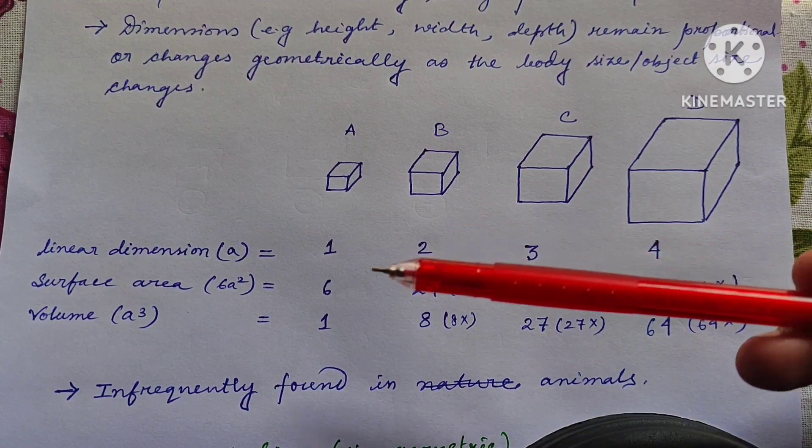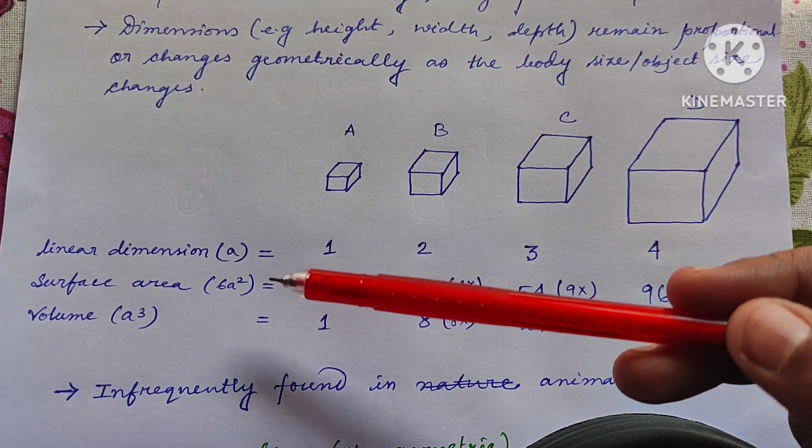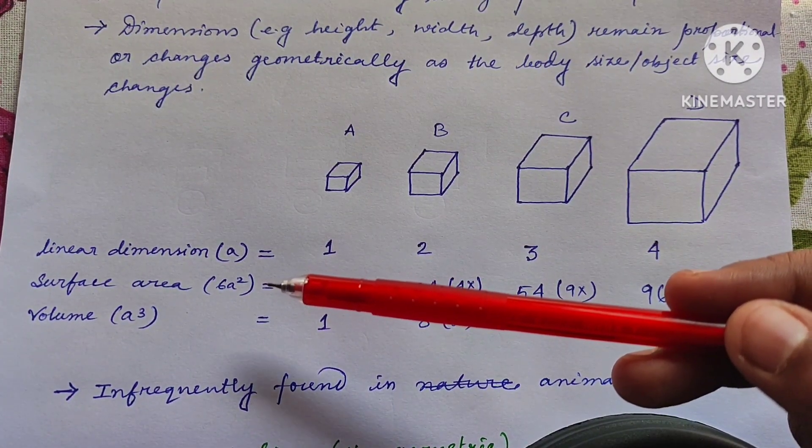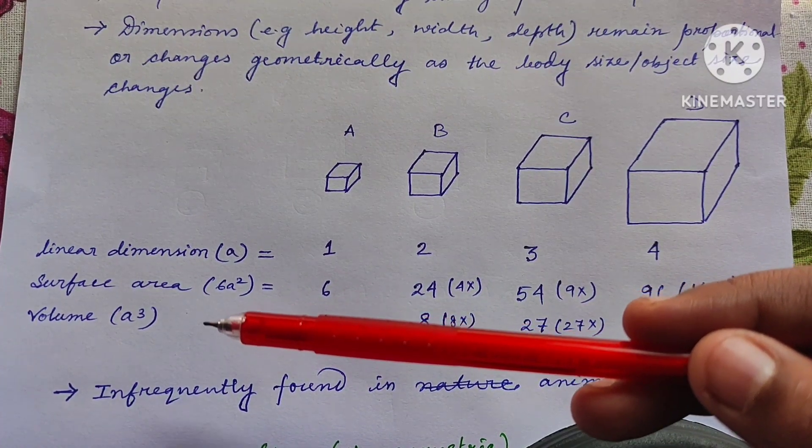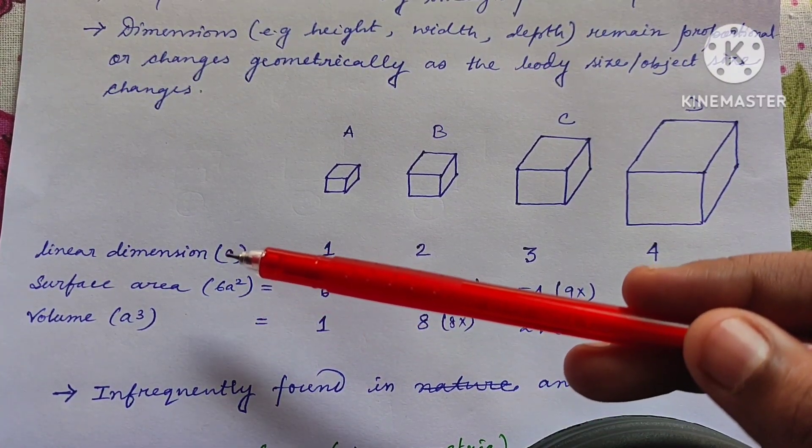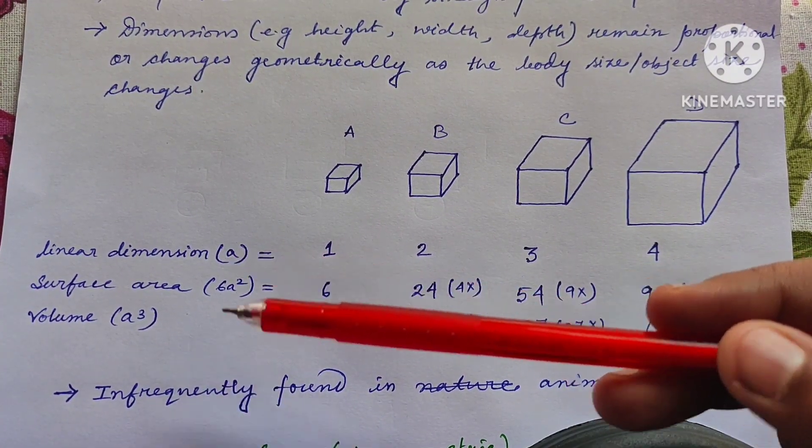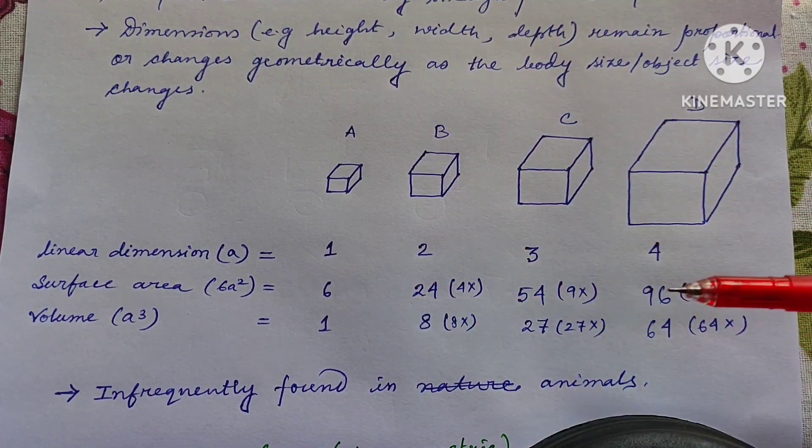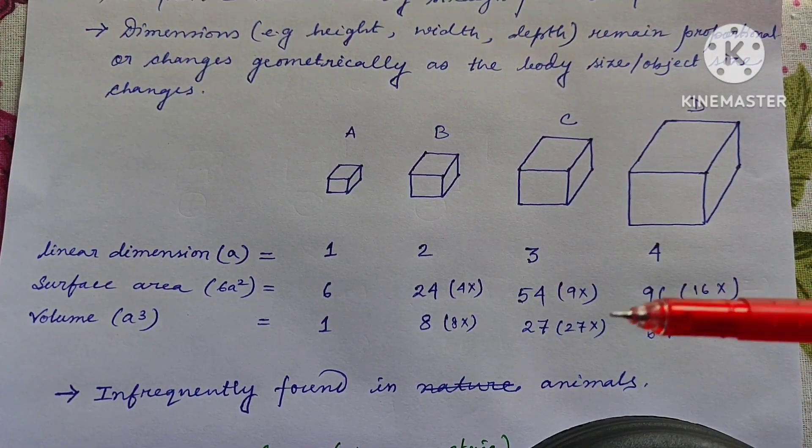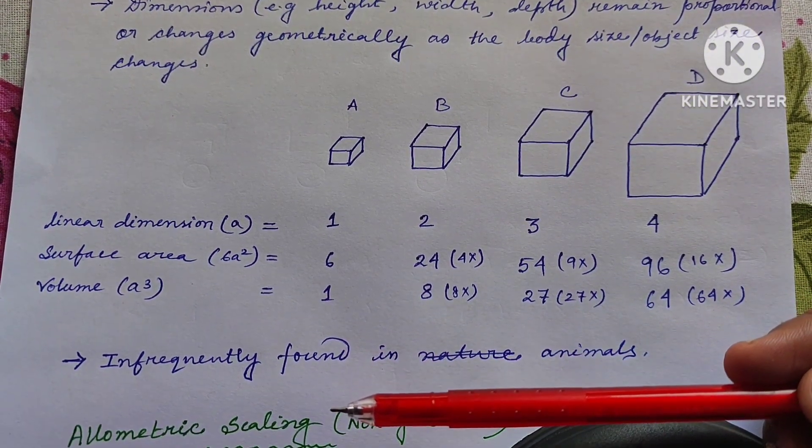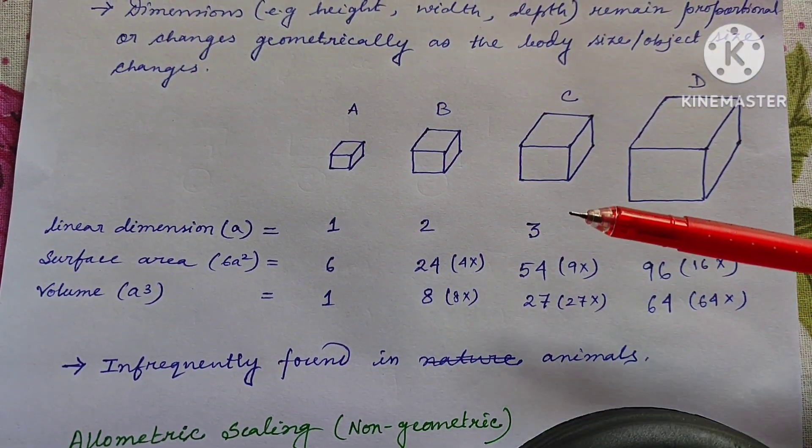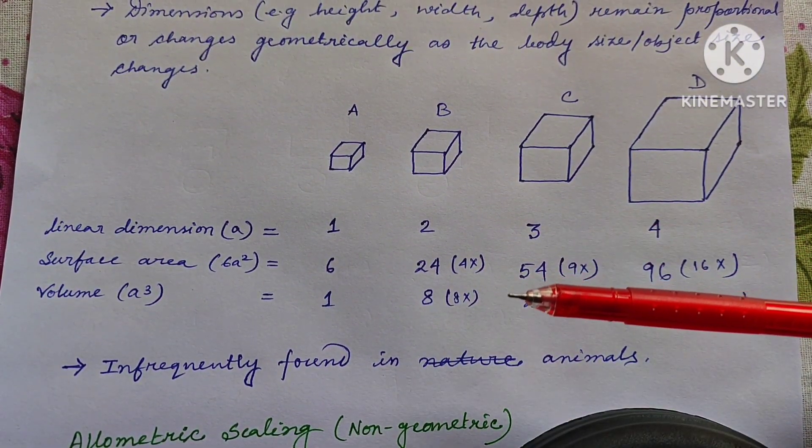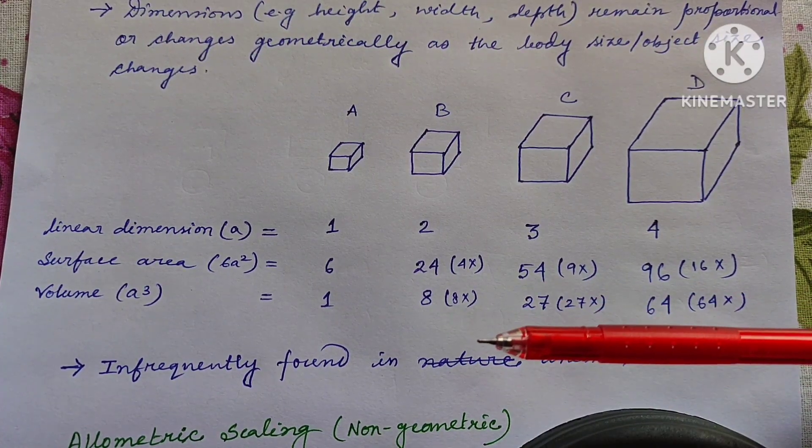So this is like here you can see the surface area changes in square form whereas volume changes in cube form relative to its linear dimension, which is known as square cube rule. So it is quite predictable. But in nature this kind of isometric scaling is not frequently found. It is very rare. Why?